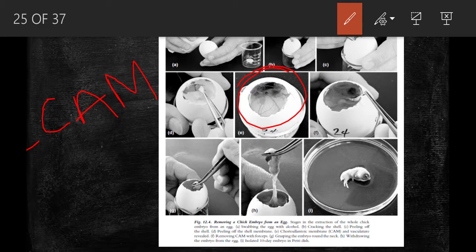This is referred to as CAM, the chorioallantoic membrane, where the blood vessels can be seen.